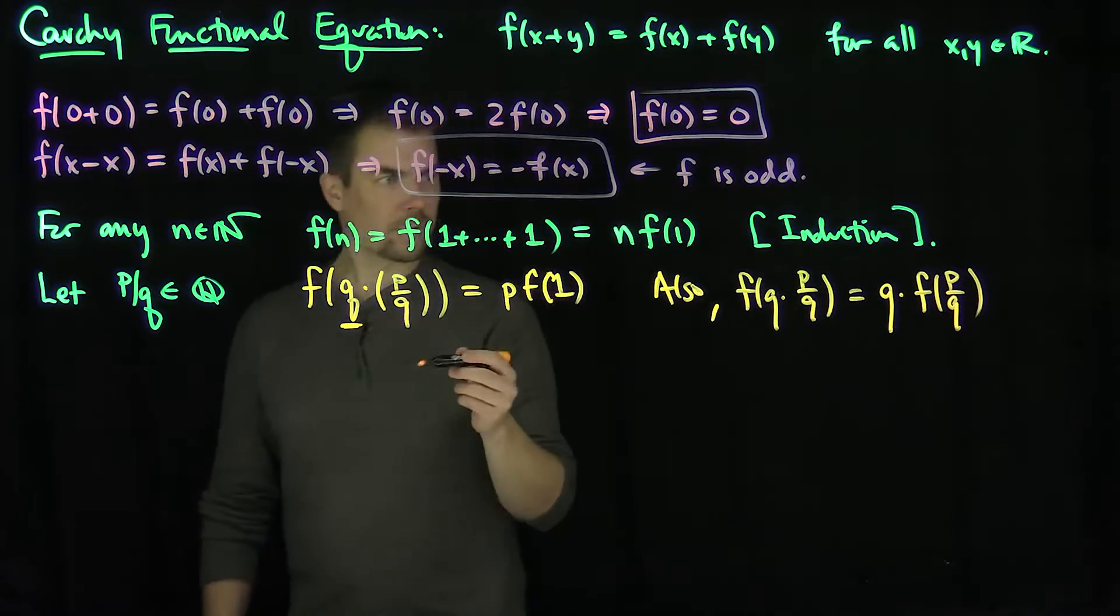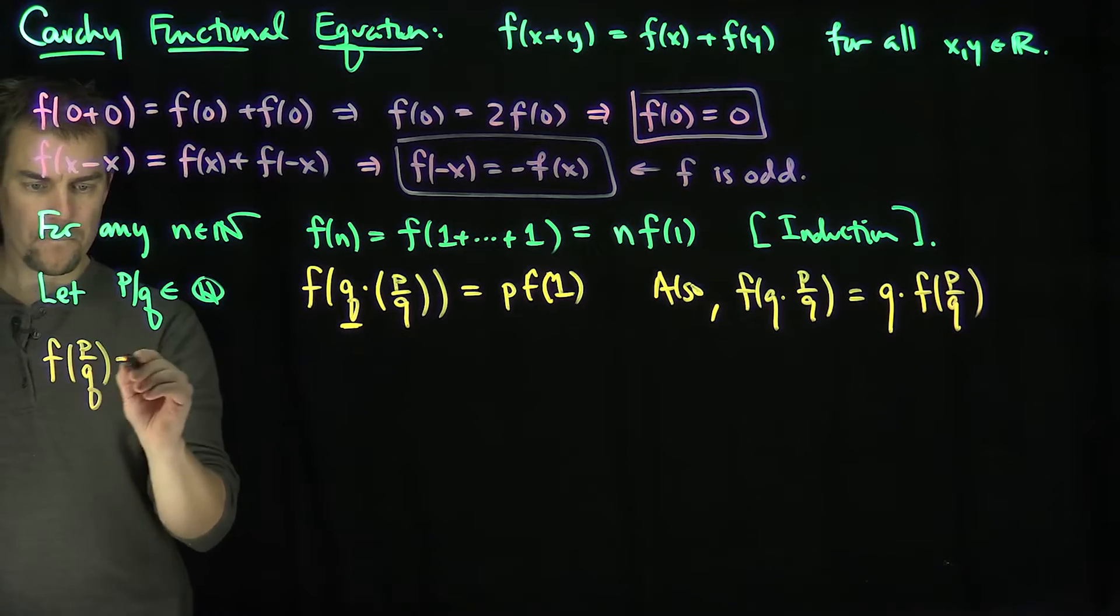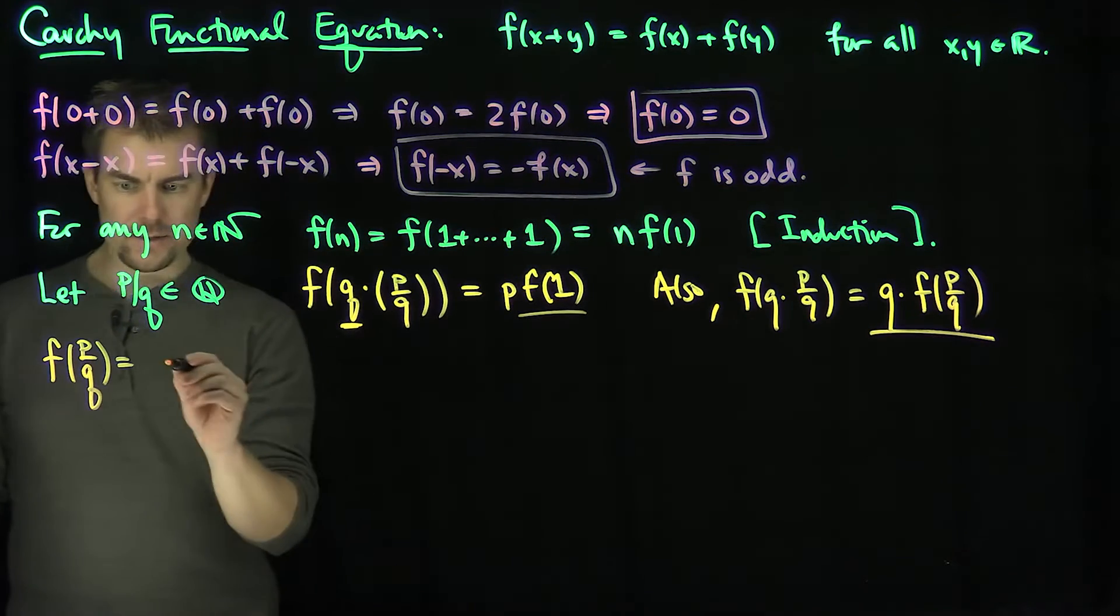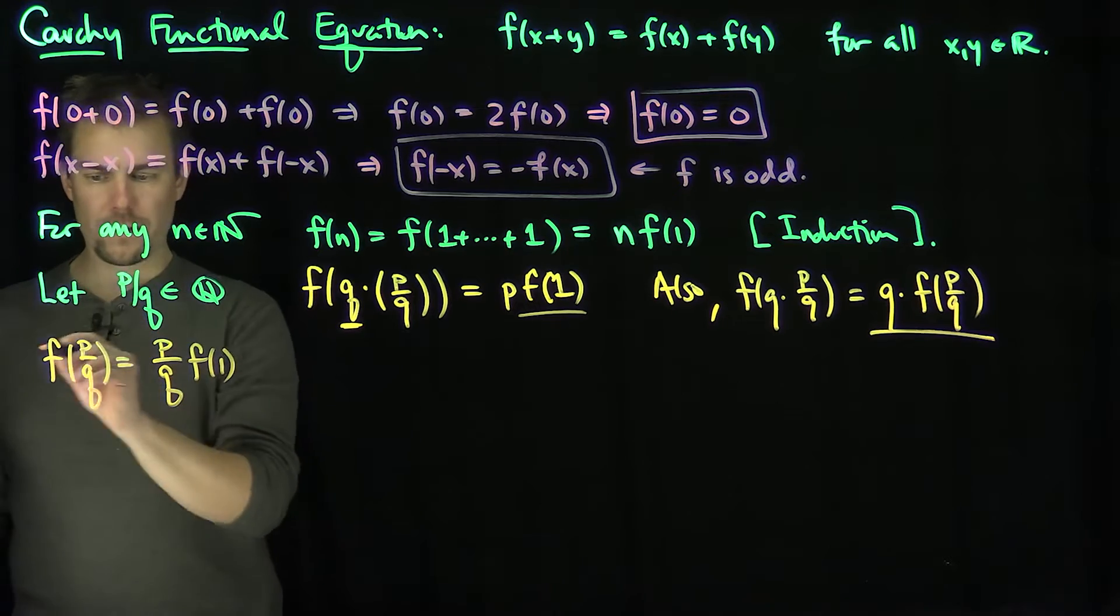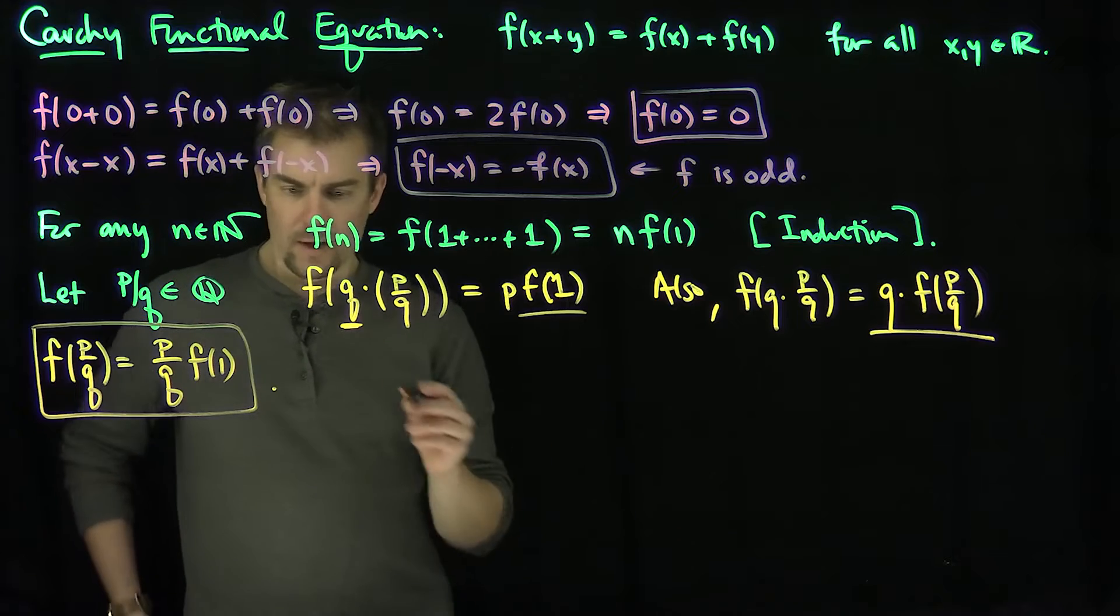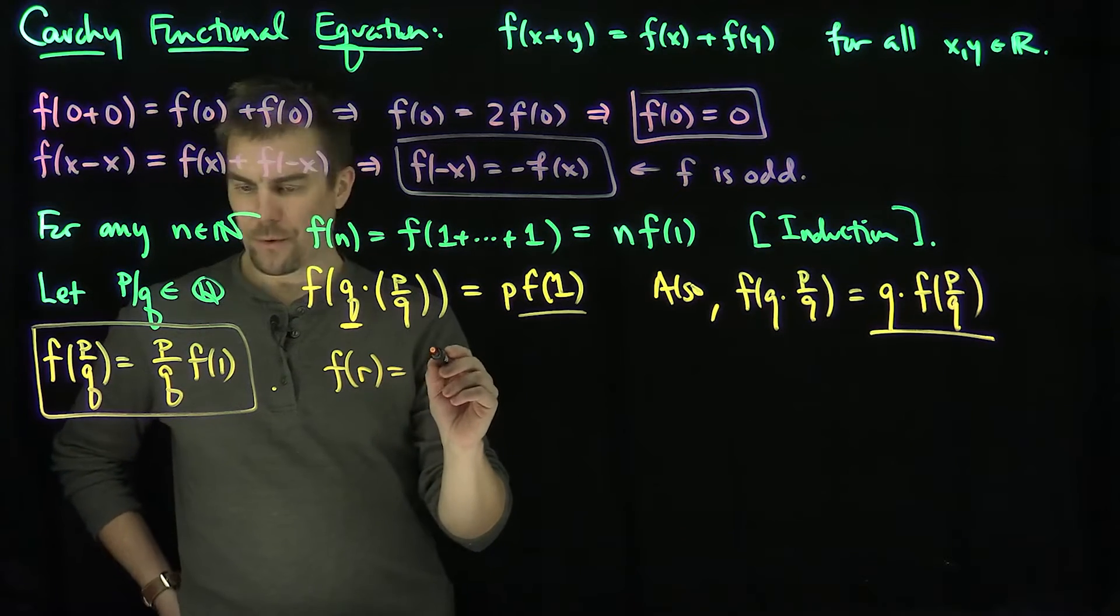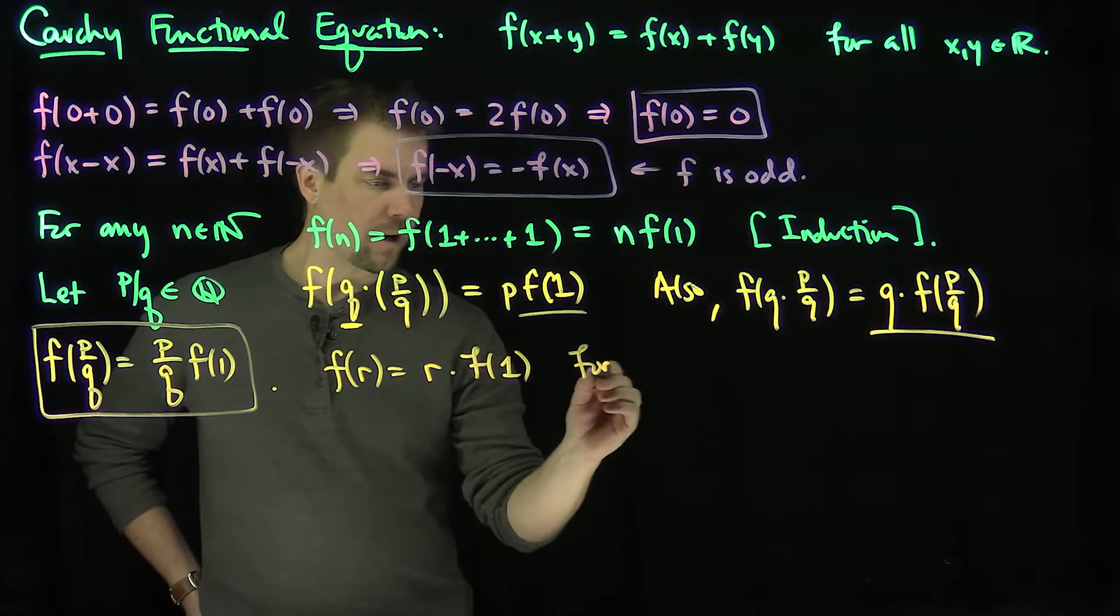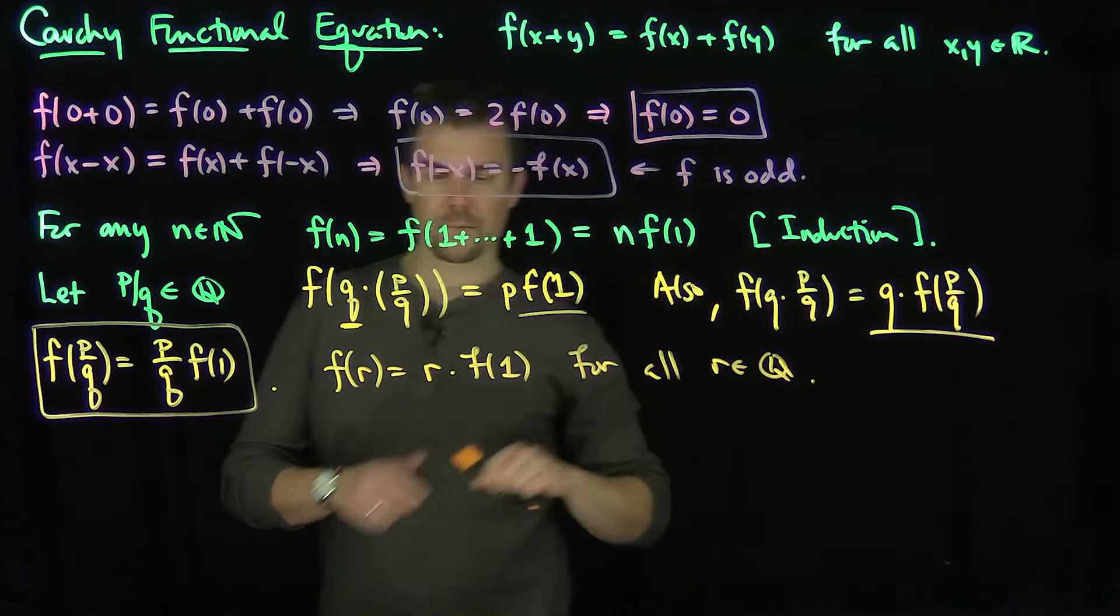So in other words, f(p/q) is equal to p/q times f(1). That's a very important formula because now, what can I say? Therefore, I can say that f(r) = r·f(1) for all r in Q.